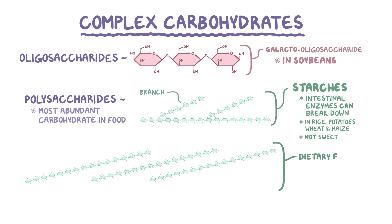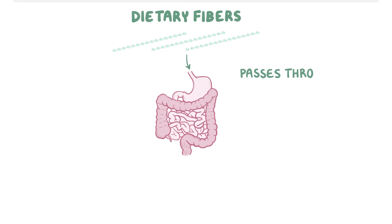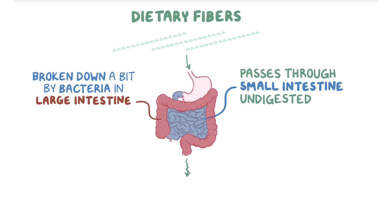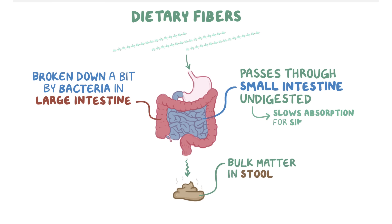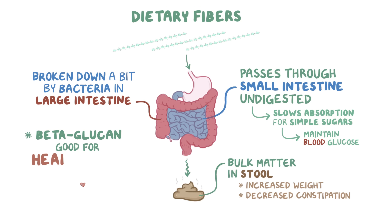There are also dietary fibers, which are carbohydrates that intestinal enzymes can't break down, so the body can't digest them. There are many different types of dietary fibers, and they're not all the same when it comes to their structure or impact on health. Fibers have molecular bonds resistant to human intestinal enzymes, so they pass through the small intestine undigested, get broken down a bit by bacteria in the large intestine, and ultimately end up as bulk matter in the stool. Fibers are critical because they can slow down the rate of absorption of simple sugars like glucose in the small intestine, which can help maintain healthy blood glucose levels. They also increase stool weight, which helps prevent constipation, and fibers like beta-glucan are also good for heart health.